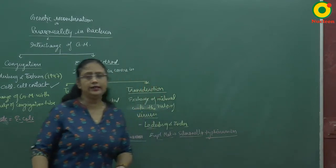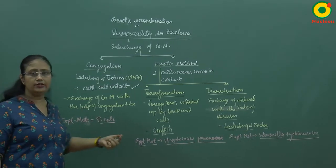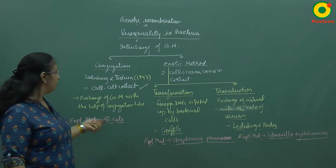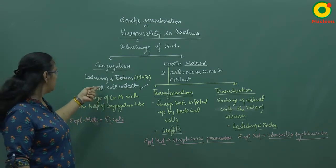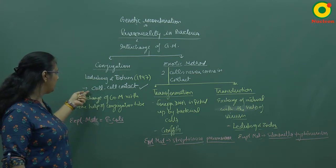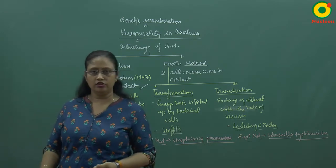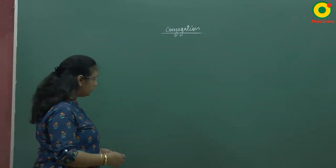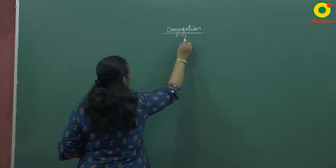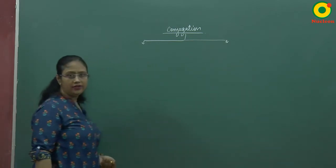So these are the three types of genetic recombination — three modes of parasexuality which we have to discuss in detail. The first type is conjugation, where the transfer of genetic material takes place with the help of a conjugation tube. Now we will discuss conjugation, which has two methods: the male sterile method and the male fertile method.